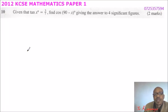This is question number 10, 2012 KCSE Mathematics Paper 1. We are told given that tan x degrees equals 3 over 7, find cos(90 minus x) degrees, giving the answer to four significant figures.